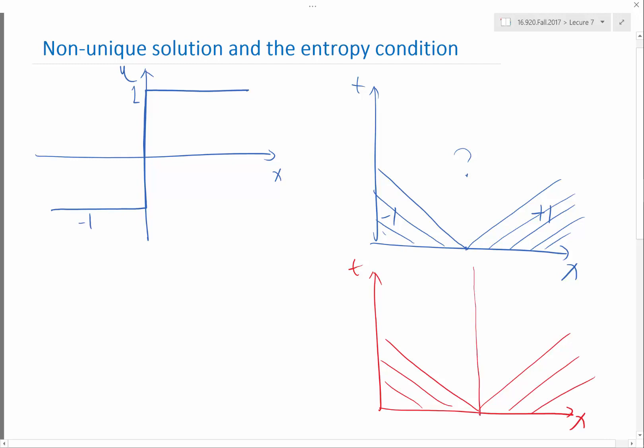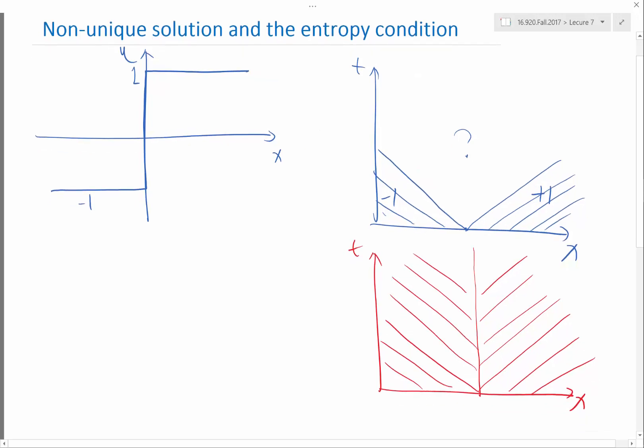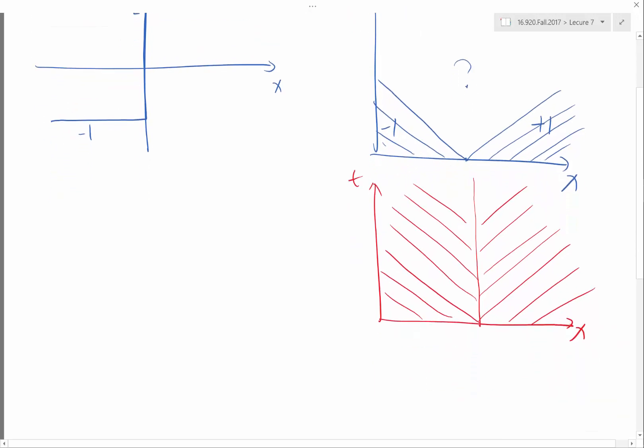In the middle, it stays a discontinuity. On the left, things go towards the left. On the right, things go towards the right. Is this a proper solution to the integral form of the differential equation, meaning d/dt integrated over any volume is going to equal to f(a) minus f(b)?